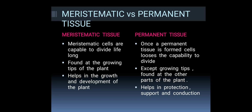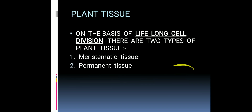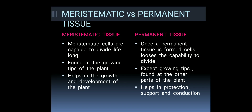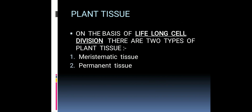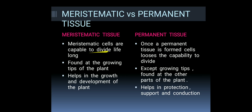Meristematic tissue is found at the growing tips of the plant, whereas permanent tissue is found at other parts of the plant except the growing tips. Meristematic tissue helps in the growth and development of the plant, whereas permanent tissue helps in protection, support, and conduction of food, water, and minerals in the plant.